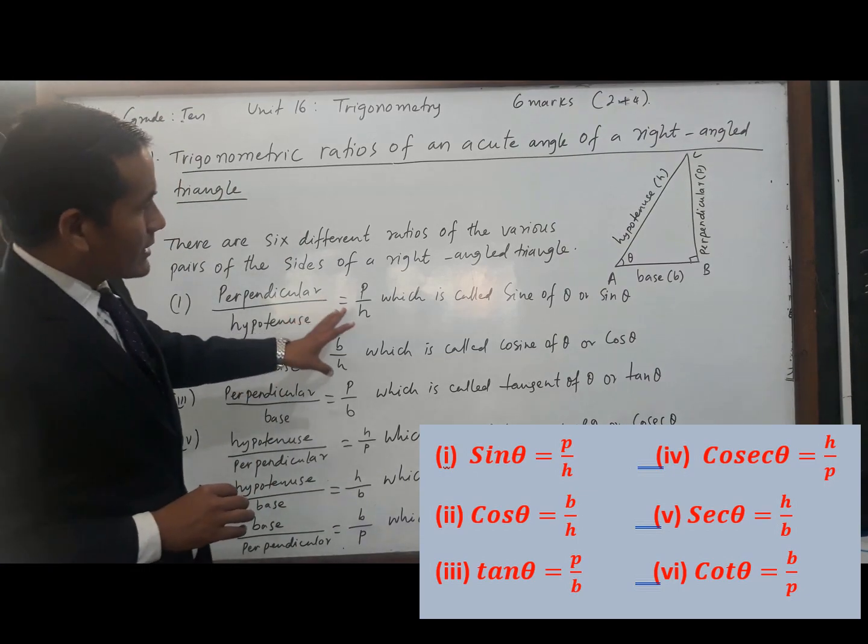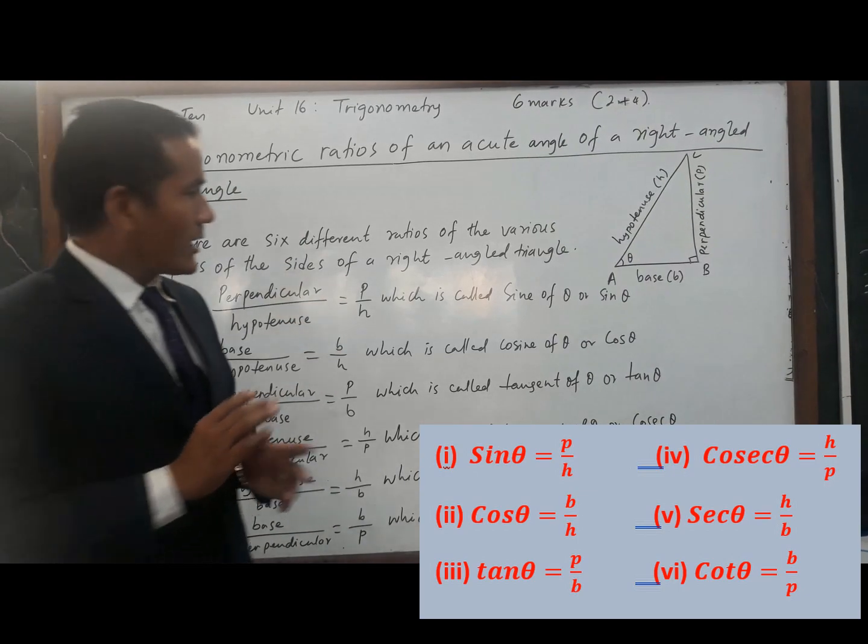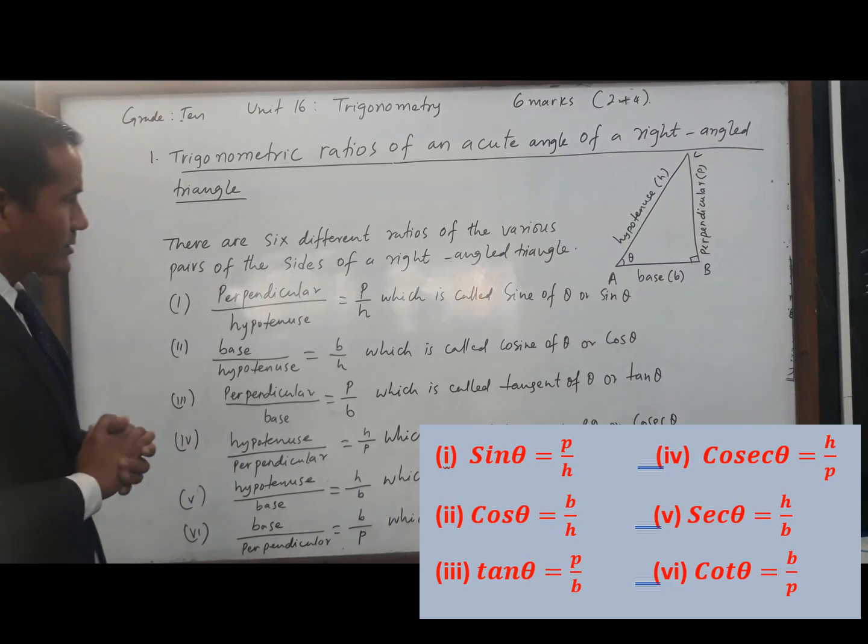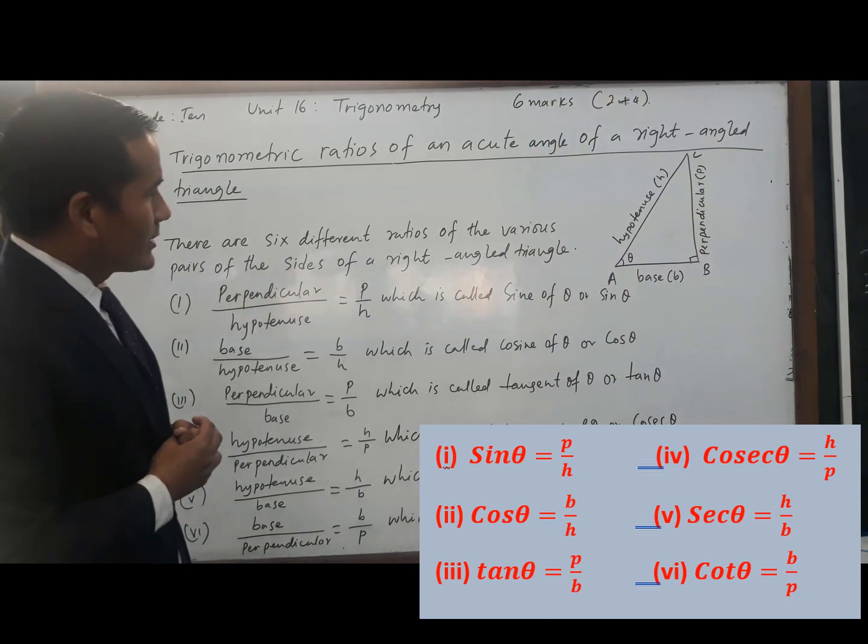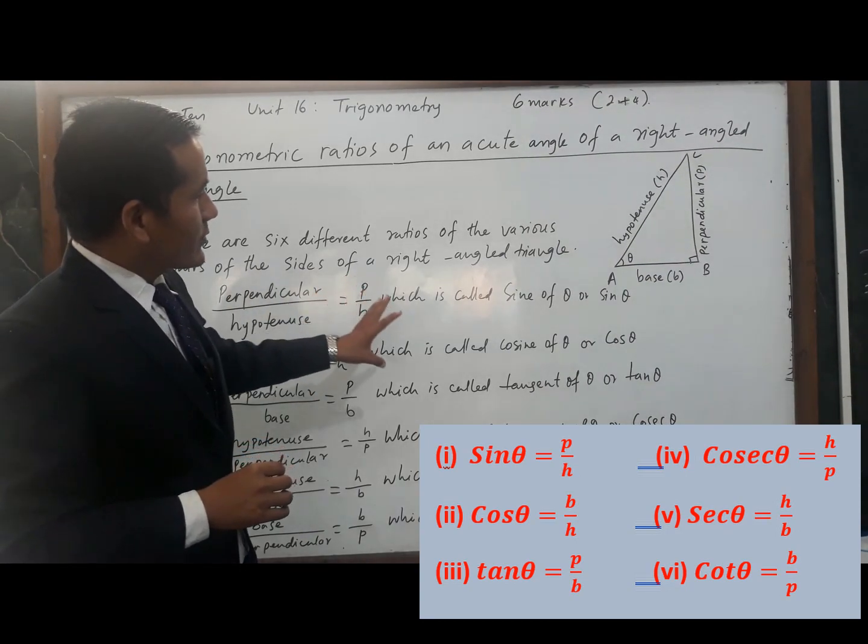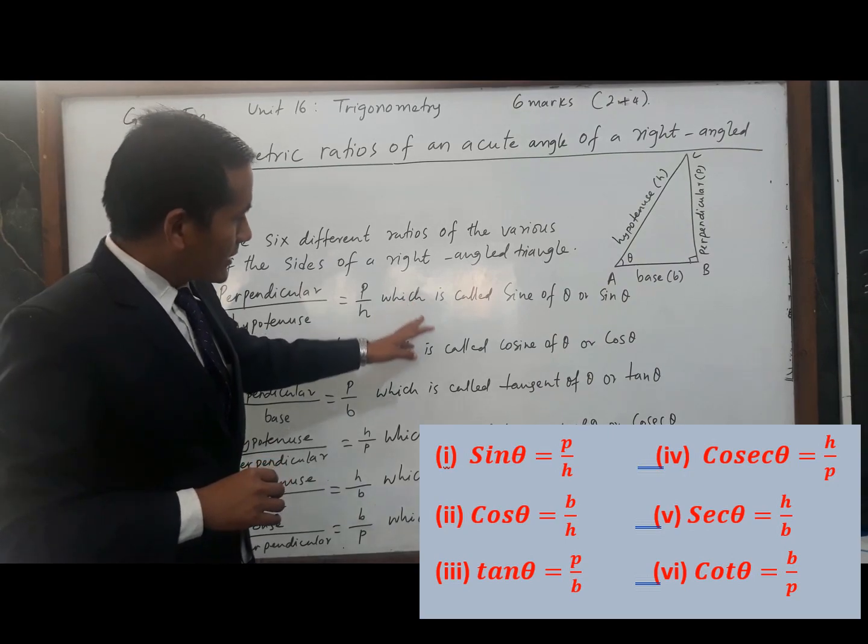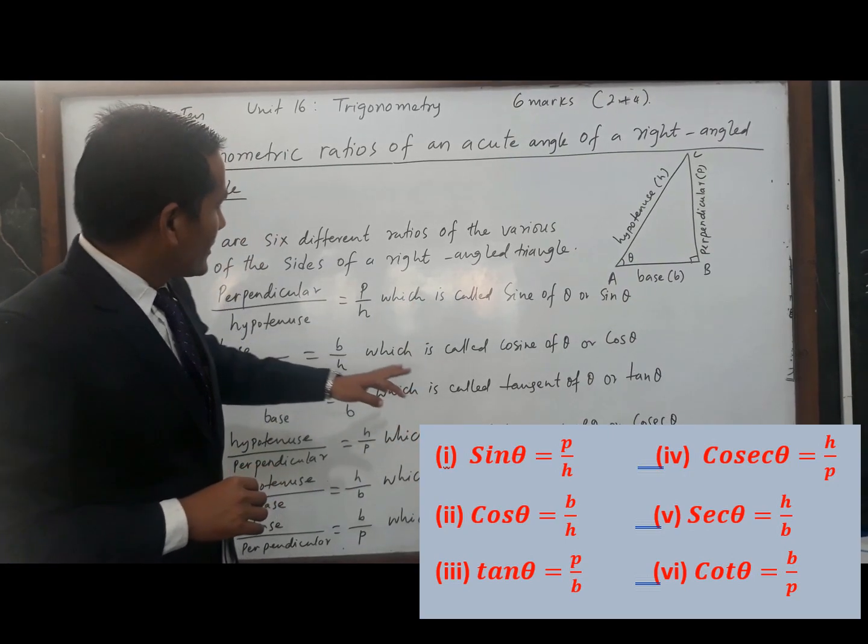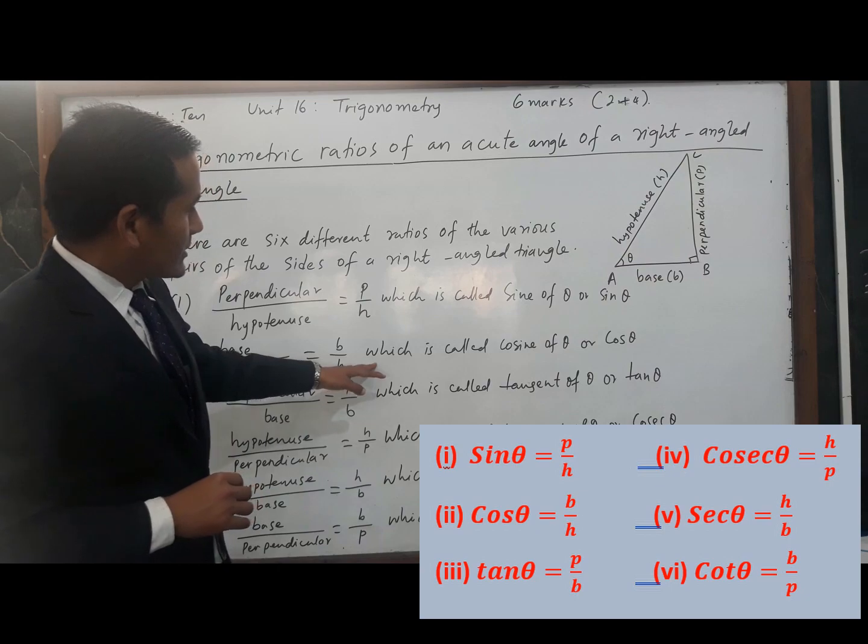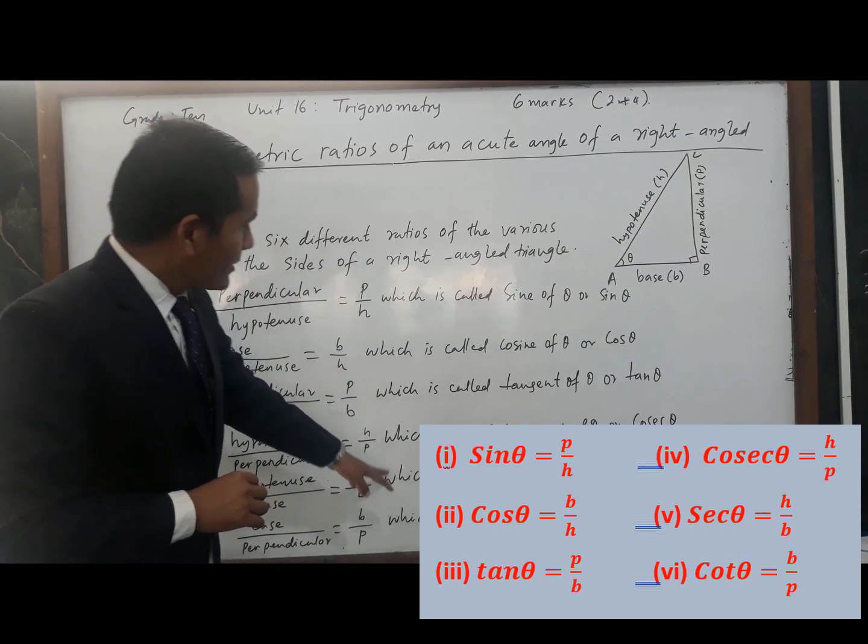These three—sine theta, cos theta, and tan theta—are the important parts of this trigonometric ratio. The reciprocal of sine theta is cosec theta, the reciprocal of cos theta is sec theta, and the reciprocal of tan theta is cot theta.